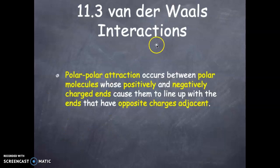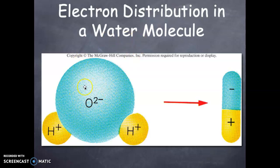Van der Waals interaction. Polar-polar interaction occurs between polar molecules whose positively and negatively charged ends cause them to line up with the ends that are opposite charge adjacent. You may think of the water molecule with the negative end of the oxygen and the positive ends of the two hydrogens. You may look at it as a simple model as this structure, this end being more positive and this end being more negative.